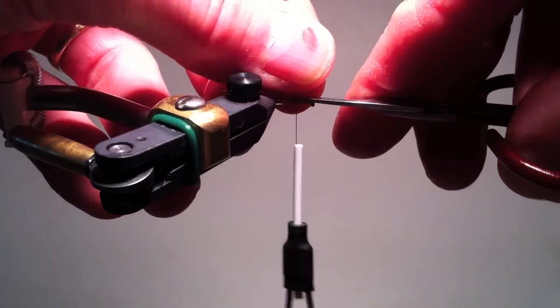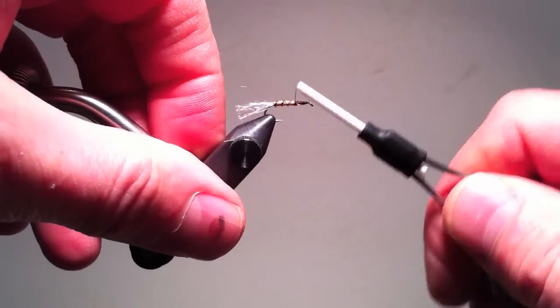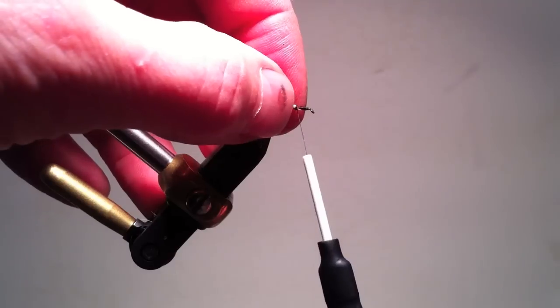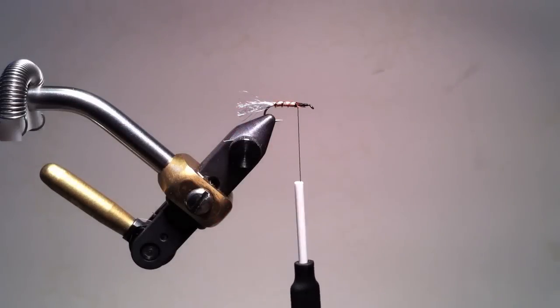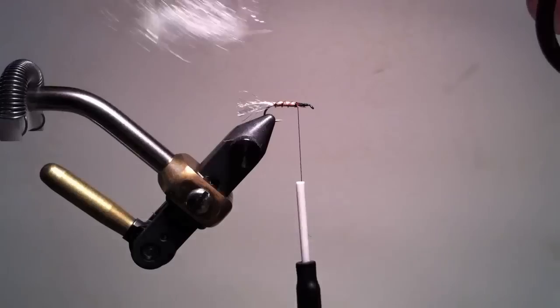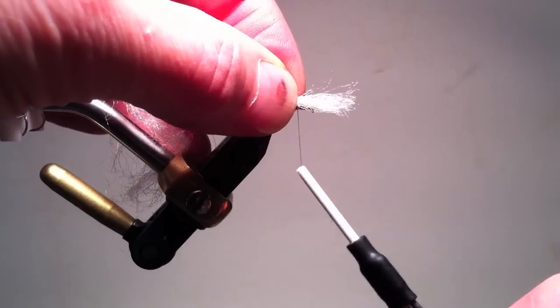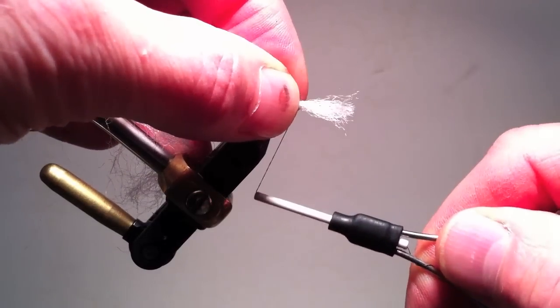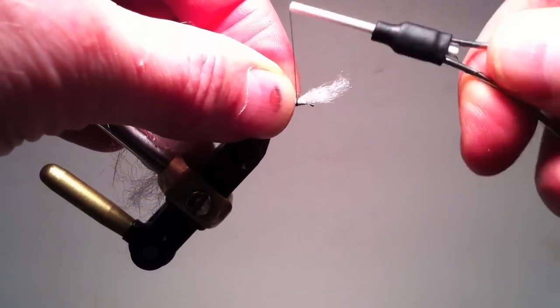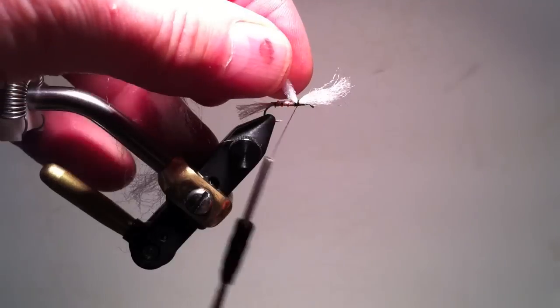Once the biot is in, I can add wing material. Since I'm using macromay polypropylene yarn, it has very little hump associated with the tie-in point, and so I can put the wing on after I put on the body material. This makes it much easier to use the rotary vise.